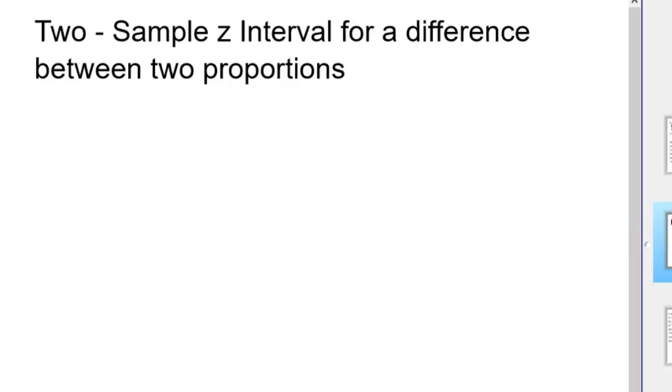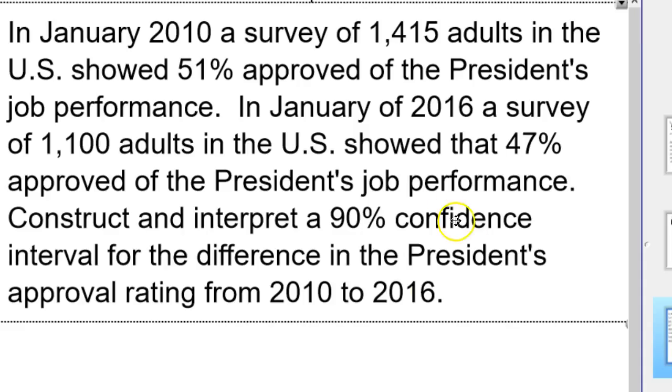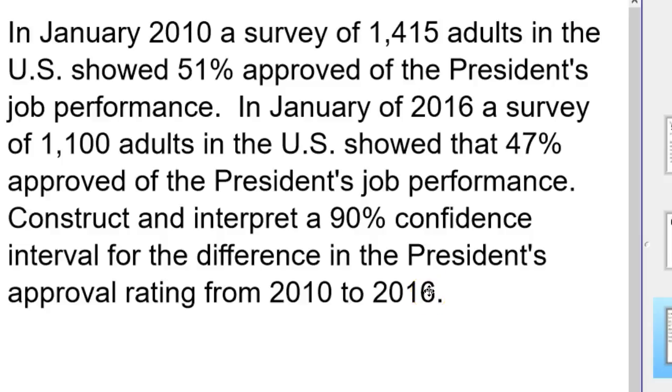Alright, in this video we're going to talk about a two-sample z-interval for a difference between two proportions. So I have a problem I made up. No real truth in any of this. Did get some numbers off the internet from the Gallup poll. But anyway, in January of 2010, a survey of 1,415 adults in the U.S. showed 51% approved of the President's job performance. In January of 2016, a survey of 1,100 adults in the U.S. showed that 47% approved of the President's job performance. Construct and interpret a 90% confidence interval for the difference in the President's approval rating from 2010 to 2016.